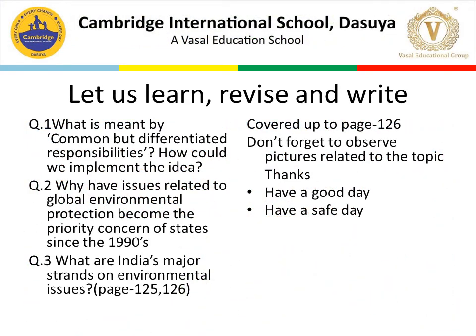Now, three topics have been covered and we will write three questions in our notebooks. You can also take help from your NCERT book — we have covered up to page number 126. Question one: What is meant by common but differentiated responsibility? How could we implement the idea? Question two: Why have issues related to global environmental protection become the priority concern of states since the 1990s? Question three: What are India's major stands on environmental issues? You can get help from page numbers 125 and 126.